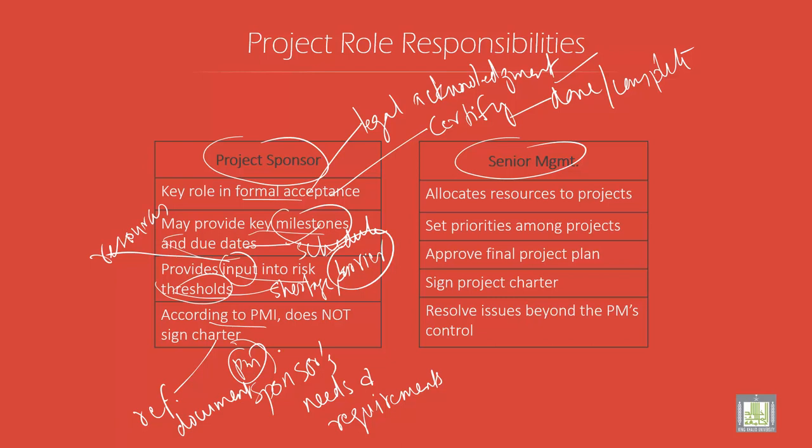Project managers play the lead role — they play the lead role in planning, executing, monitoring, controlling, and closing the projects. They are accountable for the entire project scope, project team, resources, and also the success and failure of the project.